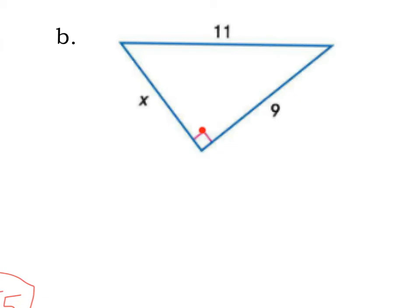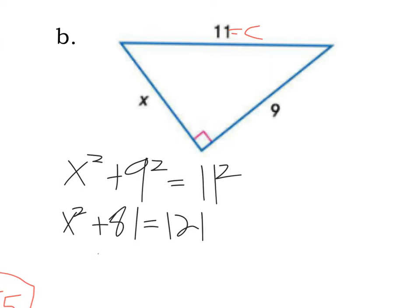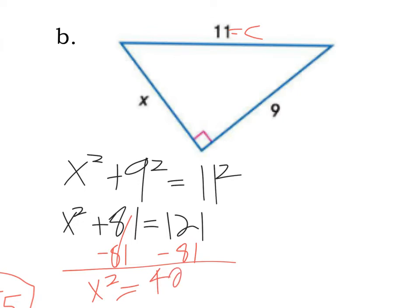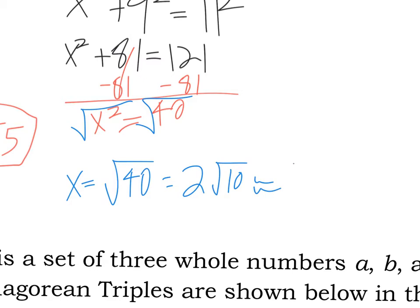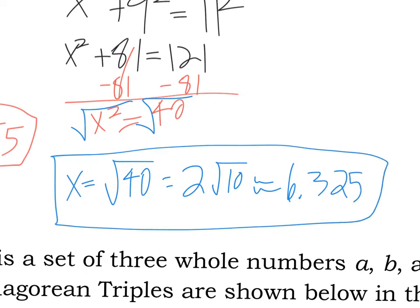In example B, the right angle is pointing to 11, making 11 my c value. So you set up x squared plus 9 squared — or 9 squared plus x squared, it doesn't matter — equal to 11 squared. 9 squared is 81 and 11 squared is 121. Subtract 81 from both sides: 121 minus 81 is 40, so x squared equals 40. Take the square root of both sides. You could leave it as the square root of 40, but simplified: 40 is 4 times 10, so x equals 2 times the square root of 10. Or rounded, x equals 6.325. Any of these three are equivalent final answers.